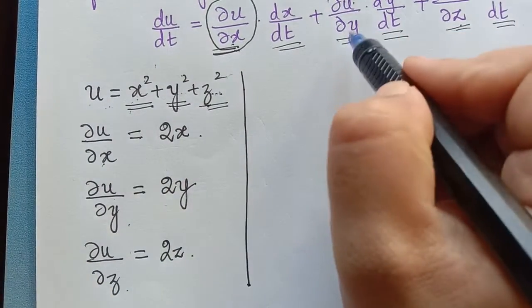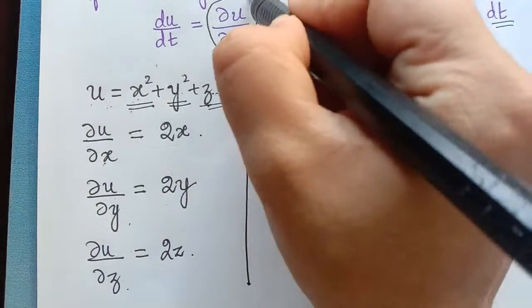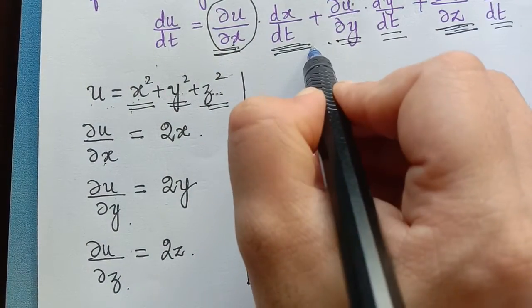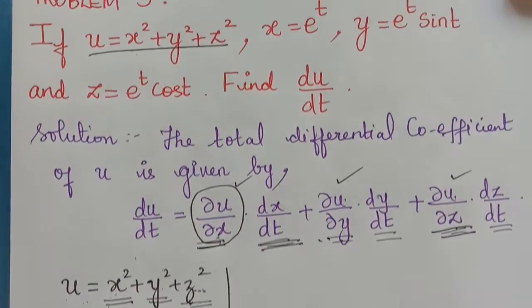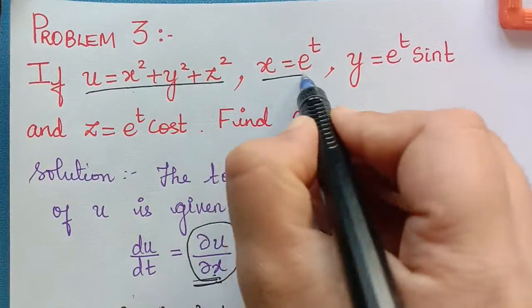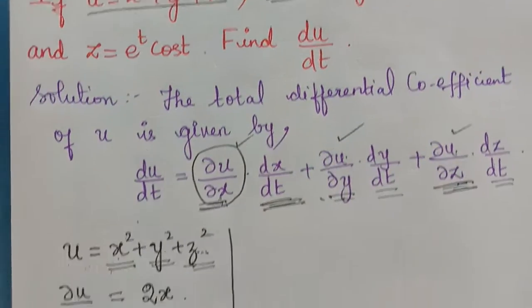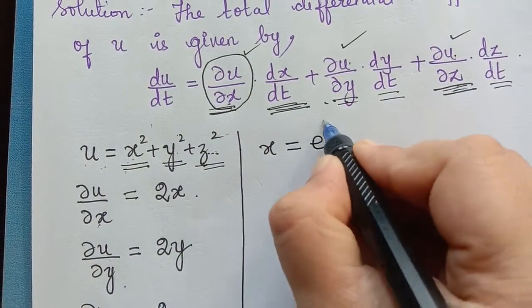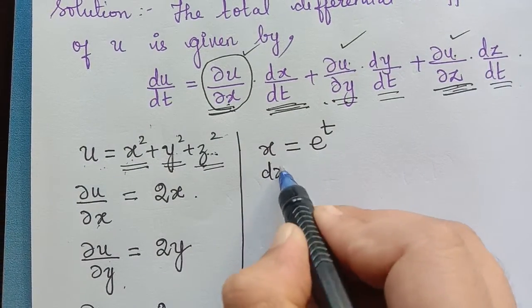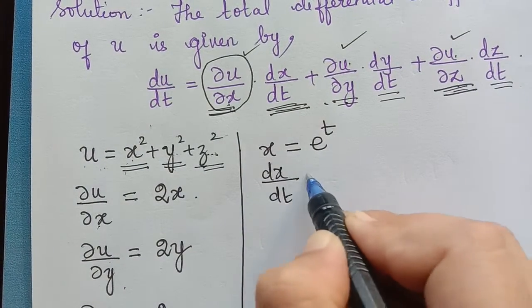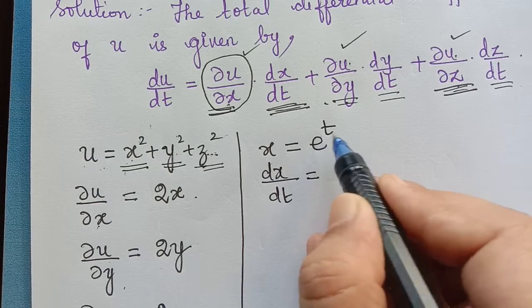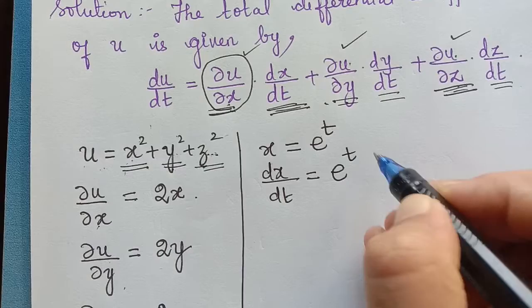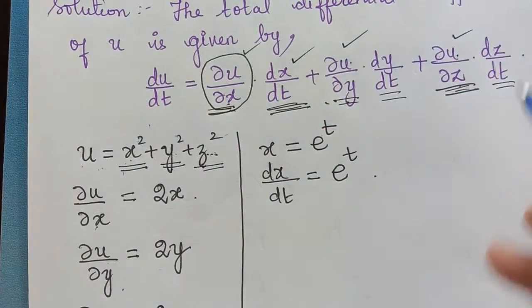Now in the formula, we have found ∂u/∂x, ∂u/∂y and ∂u/∂z. Now we have to find dx/dt, for which we must see what x is given in the question. It is given as e to the power t. So x equals e to the power t. We have to find dx/dt, which is equal to the differentiation of this. The differentiation of e to the power t is e to the power t itself.